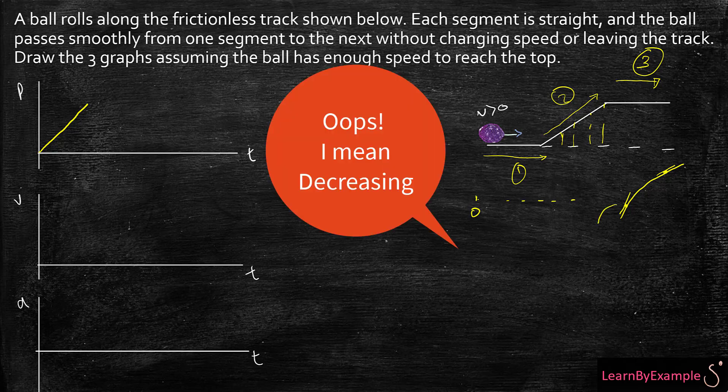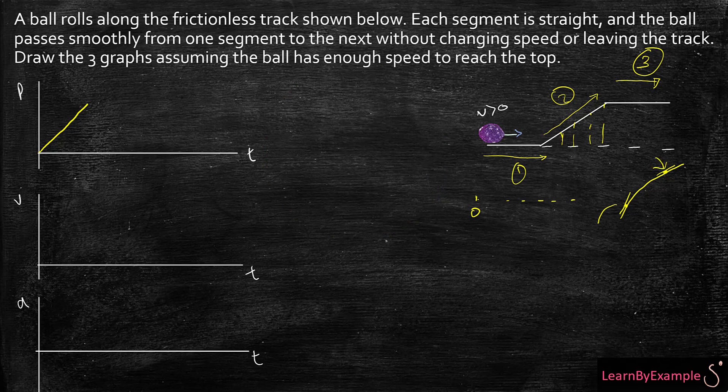Because this one has a bigger slope than this one, meaning that the second one has a lower slope and a lower velocity. So that means my velocity is decreasing. Since I'm slowing down, then I'm going to have a curve like this.